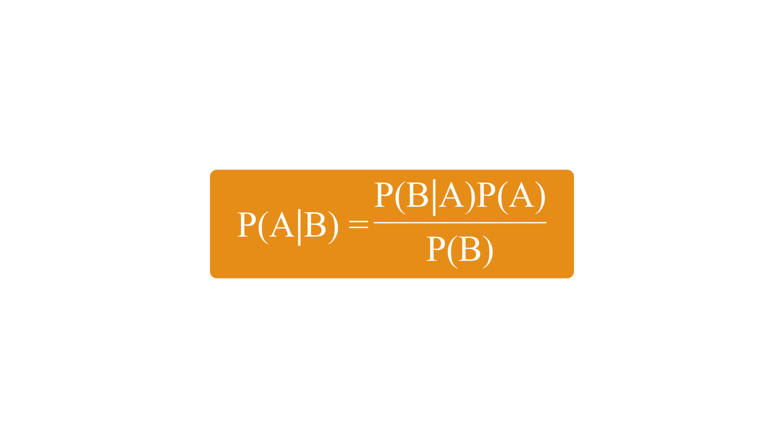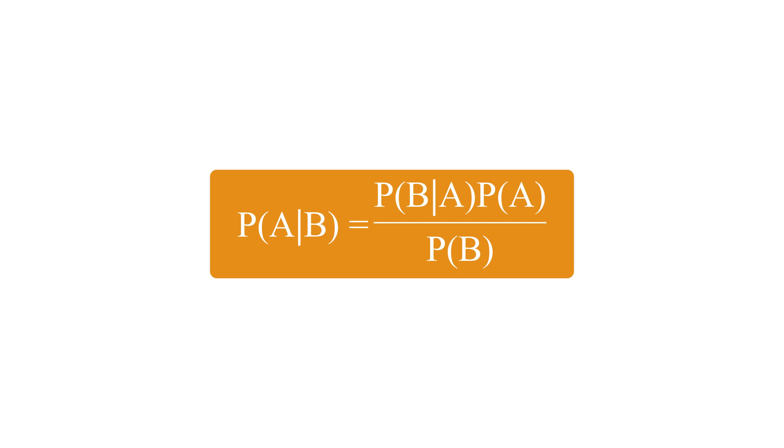Let me show you using a simple Venn diagram. Imagine two overlapping circles, one for event A, which tells that event A has occurred, and one for event B, which tells that event B has occurred. The overlapping area, or this region, represents the cases where both A and B happen together, and we call it as event A intersection with event B.